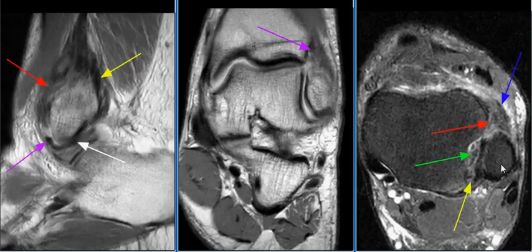Also noted is an intrasubstance split of the peroneus brevis tendon, just inferior to the lateral malleolus. MR findings are consistent with anterior syndesmotic impingement.